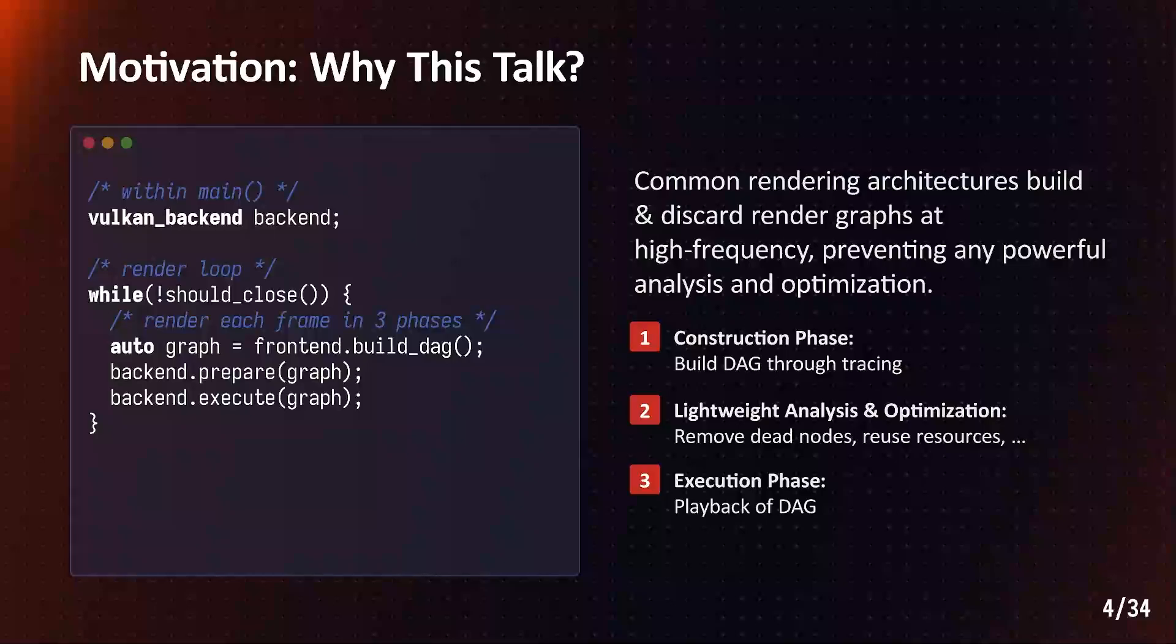The core architecture of a render graph-based renderer usually looks as follows. We first build an acyclic dependency graph through tracing. Since future usages are known, we can then run analysis and optimization passes to, for example, place barriers and assign resources,